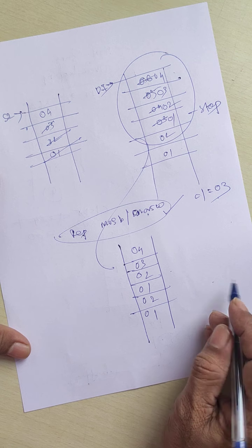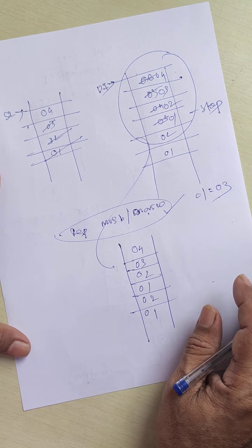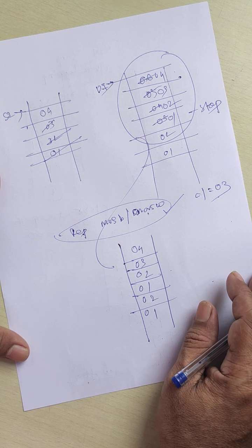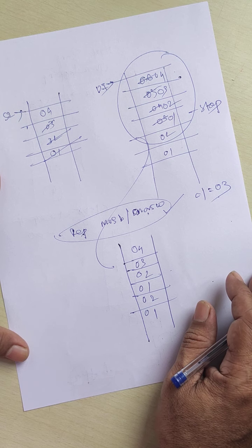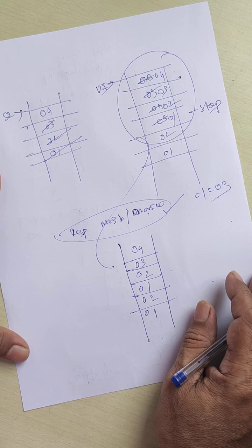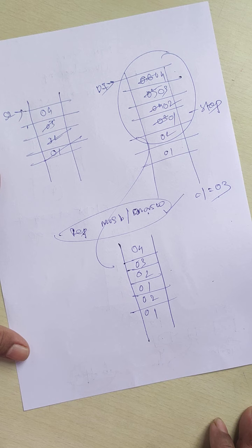That is all about the two experiments we are going to conduct in the practical session — experiment number 2 and experiment number 3. Experiment 2 covers non-overlapping operation without string and non-overlapping operation with string. Experiment 3 covers overlapping operation without string and overlapping operation with string. Through these two experiments, we learn and understand the importance of string based operations.